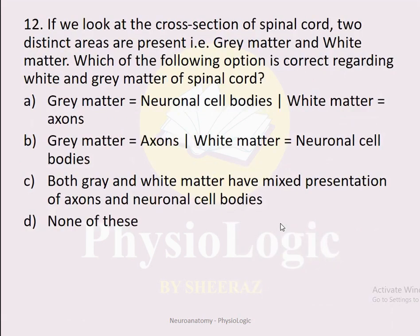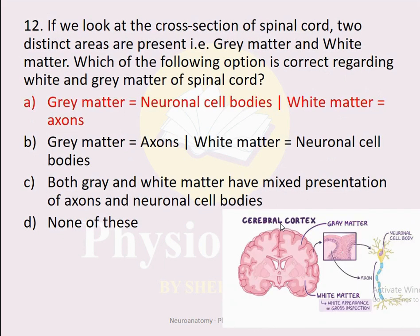MCQ number twelve: If we look at the cross section of the spinal cord, two distinct areas are present — gray matter and white matter. Which option is correct regarding them? Option A: gray matter = neuronal cell bodies, white matter = axons. Option B: gray matter = axons, white matter = neuronal cell bodies. The correct option is A. The collection of neuronal cell bodies is gray matter, and the collection of axons is white matter.